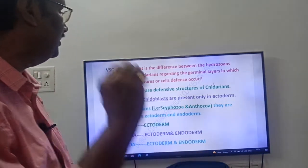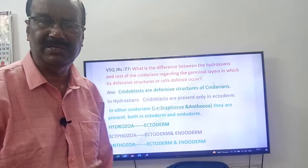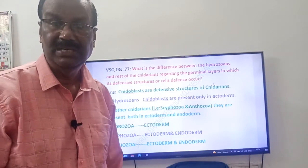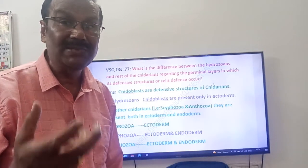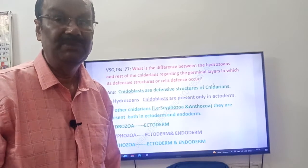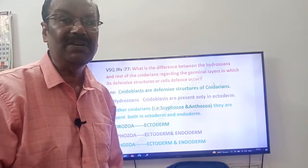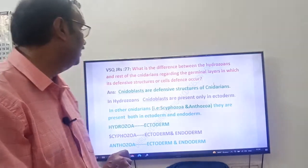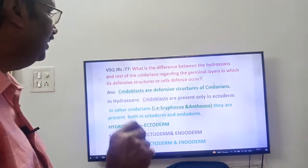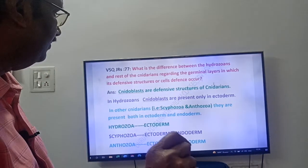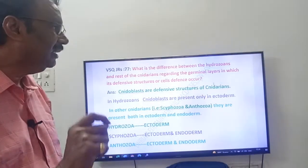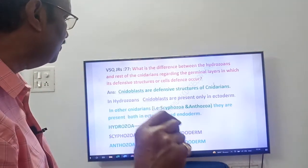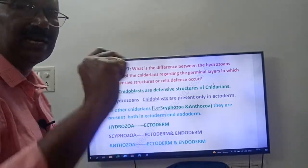In which layer are the defensive structures found? What are the defensive structures? Cnidarians have defensive cells called nidoblasts — that is why they got the name Cnidaria. Now, once again, read the question: what is the difference between the Hydrozoa and the rest of the Cnidarians regarding the germinal layers in which their defensive structures occur?